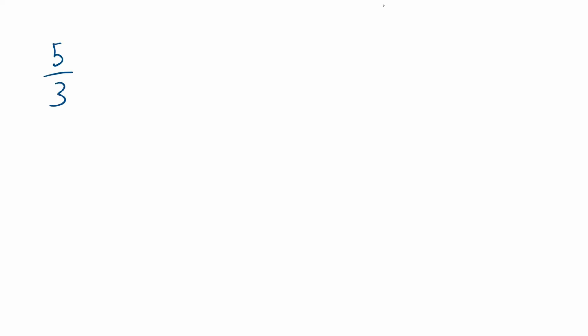Now if you recall, we had integer division. So if I had five divided by three, which in our C++ code looked like five and then a forward slash three, this gave us the result one. The reason why we got one and not one-point-something was because this was integer division and the fractional part got truncated.